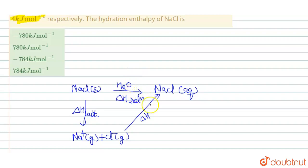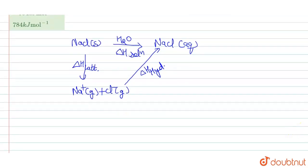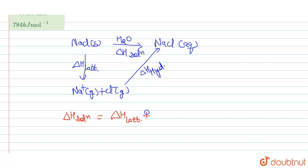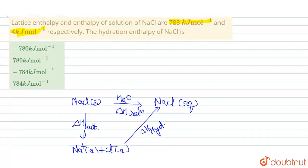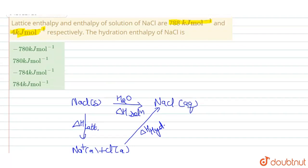The energy released equals delta H hydration. The relation between the three terms is: delta H solution equals delta H lattice plus delta H hydration. This is the key relation connecting enthalpy of solution, lattice enthalpy, and hydration enthalpy.